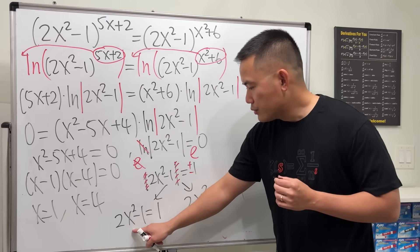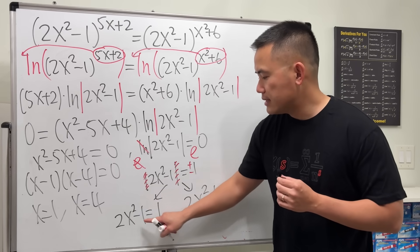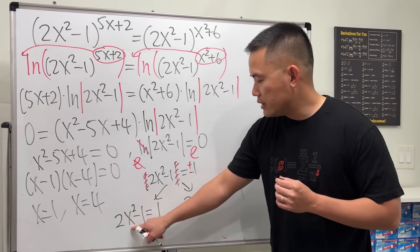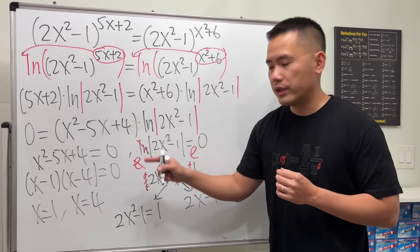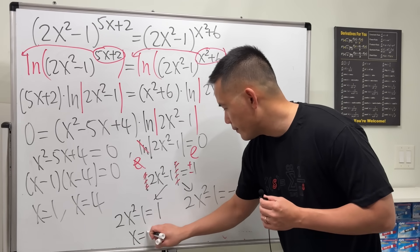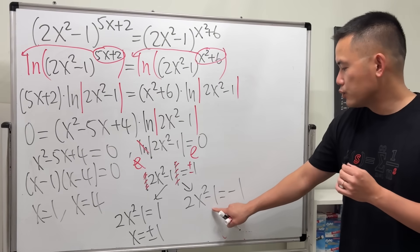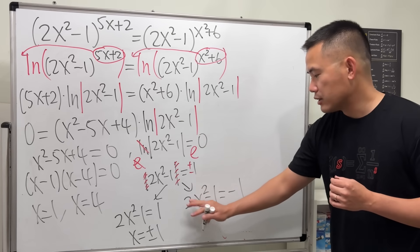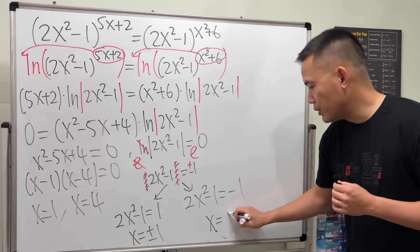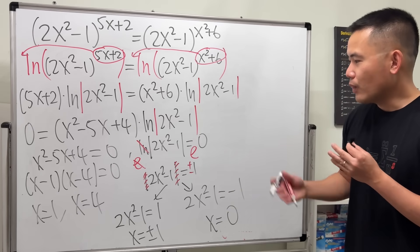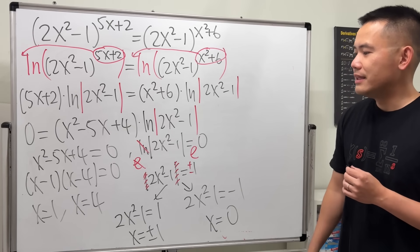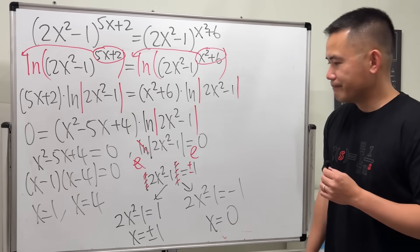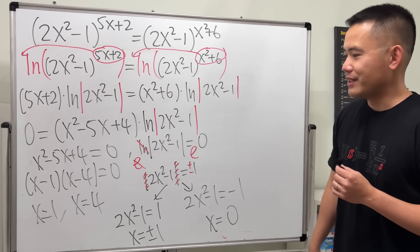For 2x² - 1 = 1: adding 1, dividing by 2, and taking the square root gives x = ±1. For 2x² - 1 = -1: the usual steps give 2x² = 0, so x = 0. Even though x = 1 appears in both, we don't need to write it down twice.